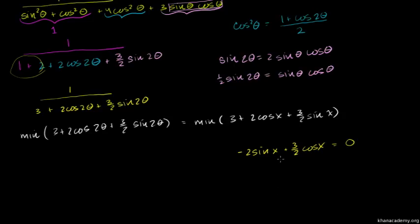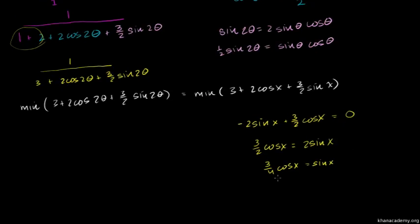We have negative 2 sine x plus 3 over 2 cosine x equals 0. This gives us 3 over 2 cosine x equals 2 sine x, so 3 over 4 cosine x equals sine x. Therefore, 3 over 4 equals sine x over cosine x, which means tangent x equals 3 over 4.